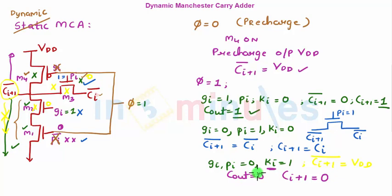What we did was simple: we took the PMOS transistor and the NMOS transistor connected to ground, removed their static circuit inputs, connected both together, and gave them the input PHI — making it a dynamic Manchester carry adder without adding any additional circuitry. Now let's quickly build a 4-bit dynamic Manchester carry adder by replicating the same circuit four times. I've drawn a rough sketch and we'll label all the inputs together.